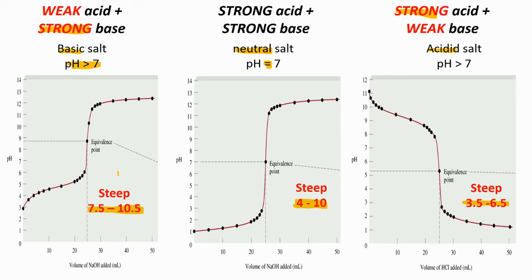Let's look at the difference between these three titration curves. For pH equals 7 — neutral salts — the steep is larger, from 4 to 10. For basic or acidic salts, the steep is shorter. You can also see that there is one part where the pH is almost maintained and doesn't change much. This is due to the buffer solution or buffer region, where we have the weak acid and conjugate base, or the weak base and its conjugate acid. When comparing the three curves, you can determine whether you have basic, acidic, or neutral salts.